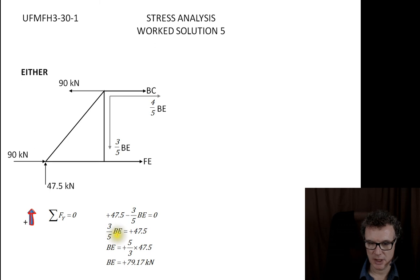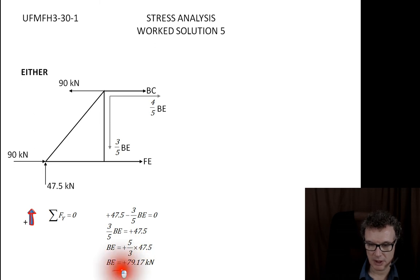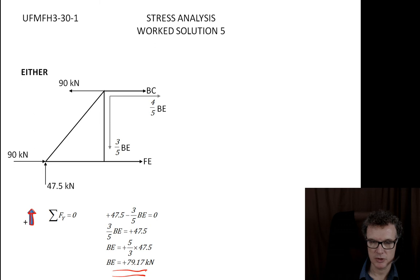Putting that into the calculator, we get BE = 79.17 kN — wait, the course notes get 97.17 kN, so let's go with that value. We've found what BE is.